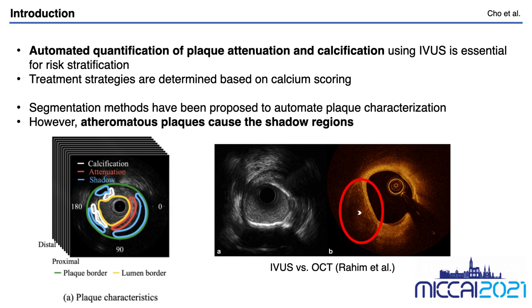To automate the plaque characterization process, segmentation methods have been mainly proposed based on machine and deep learning techniques. These models try to learn a mapping from a single IVUS frame to the plaque composition map in a supervised learning fashion. This means those processes need pixel-level annotations for training a segmentation model. However, unlike OCT, IVUS frames include echogenous plaques which cause shadow regions due to the restriction of acoustic physics. The shadow region is represented as black pixels in the IVUS and does not provide any information about the characteristics of the region. Therefore, it is impossible to label the complete plaque composition map using only IVUS for clinical uses.